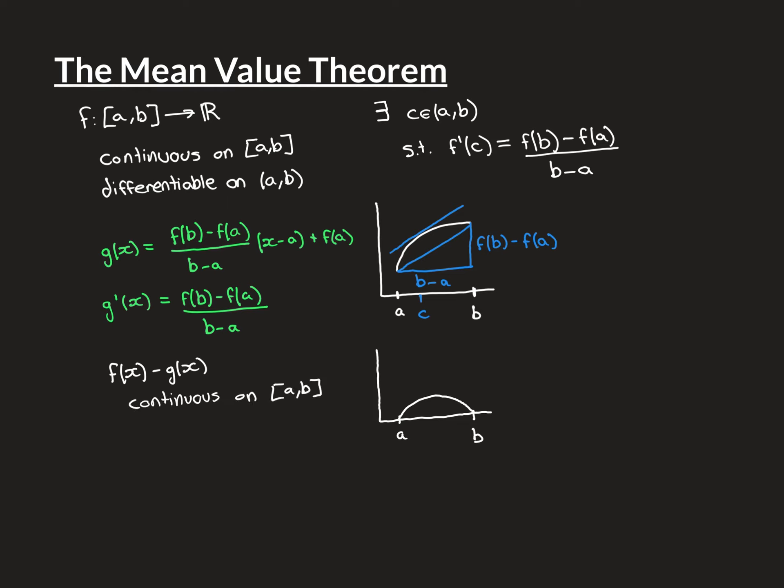There are a few technicalities to check before applying Rolle's Theorem to f(x) minus g(x). For continuity: f and g are both continuous on the closed interval [a, b]. Since g is continuous, negative one times g is also continuous, as multiplying by a real number preserves continuity. Adding two continuous functions gives another continuous function, so f(x) minus g(x) is continuous on the closed interval [a, b].